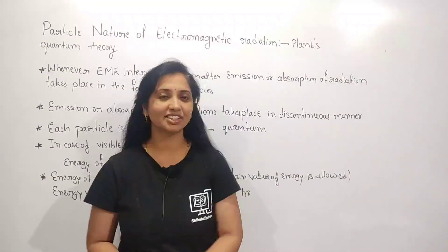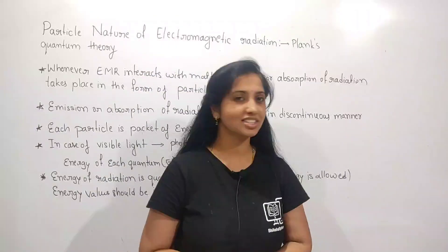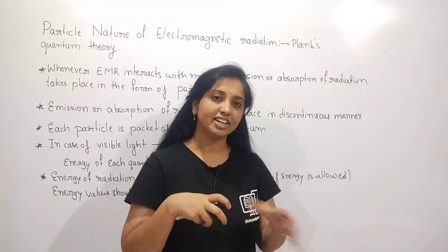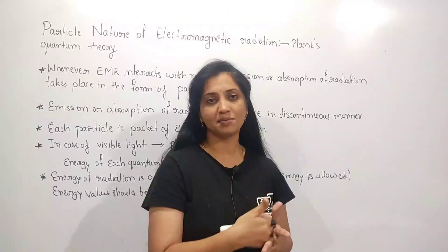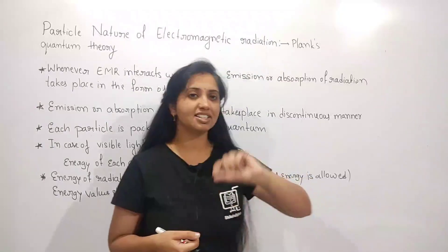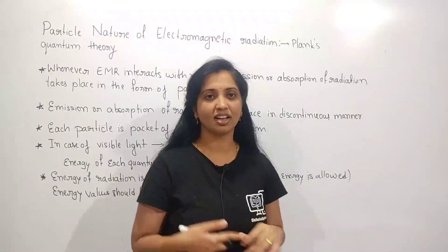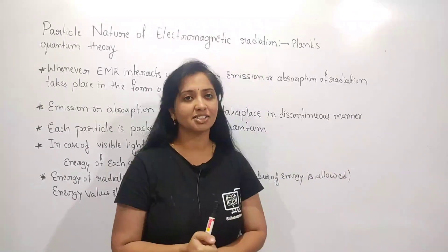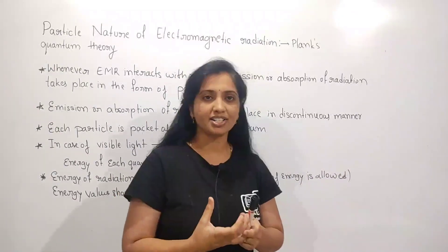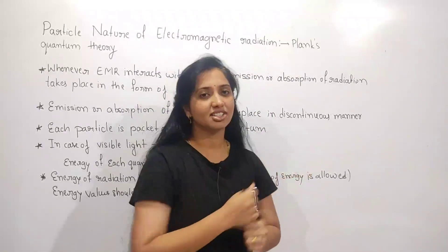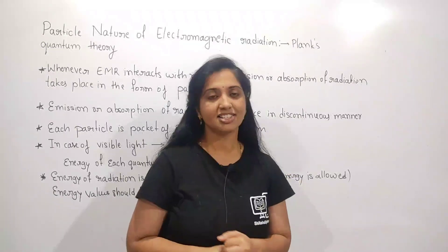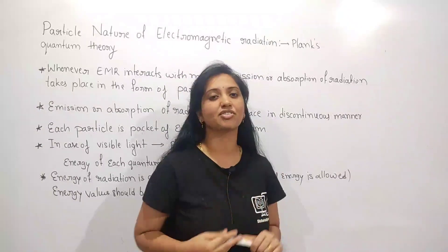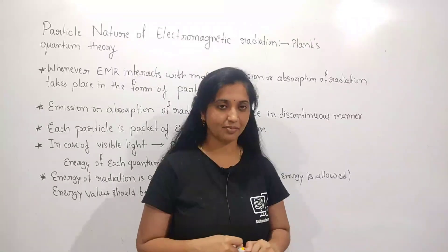Hello guys, we are moving with our second chapter: the structure of an atom. This chapter will explain all about an atom. We already studied some models like the Thomson model and the Rutherford model, but they failed to explain some facts about the structure of an atom. Then we moved to the Bohr's atomic model. Before studying that, we looked at some key points, including the dual nature of electromagnetic radiation and atomic spectra.